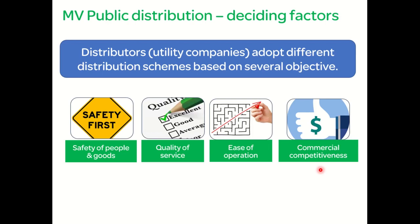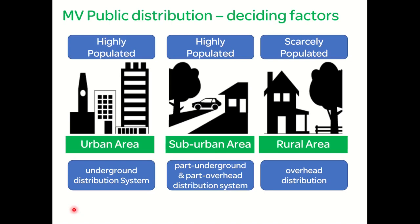Another important factor for the distributor to consider is the type of geographical area where the scheme is required to be implemented. Public distribution areas can be urban areas with high-rise buildings, suburban areas with mostly housing schemes, or rural areas where consumers are located far from each other.